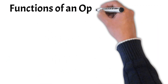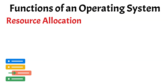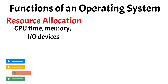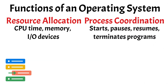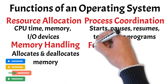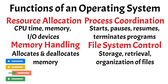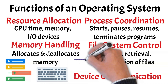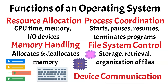Now let's look at the core responsibilities that allow the OS to keep everything running smoothly. One of its key functions is handling system resources, deciding how and when hardware like the CPU, memory, and storage should be used. It also coordinates processes by starting, pausing, or terminating programs, ensuring they don't interfere with each other. The OS keeps track of memory usage, allocating space when needed and freeing it when not. It also takes care of file systems, managing how data is stored and retrieved on disk. Another important function is controlling input and output, making sure devices like keyboards, printers, and network cards communicate effectively with the rest of the system. Together, these functions form the invisible framework that allows software and hardware to work in harmony.